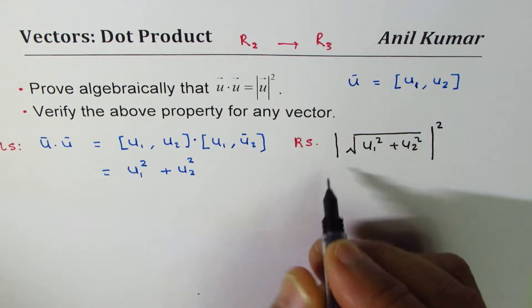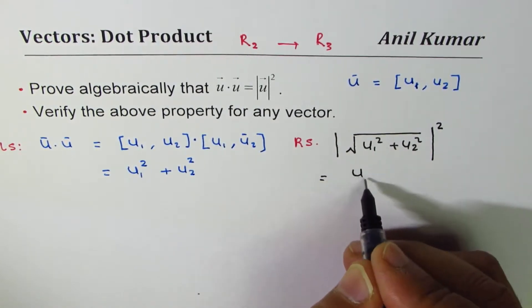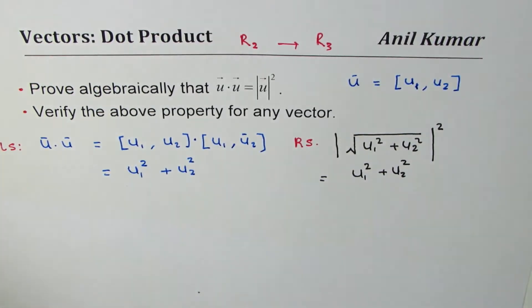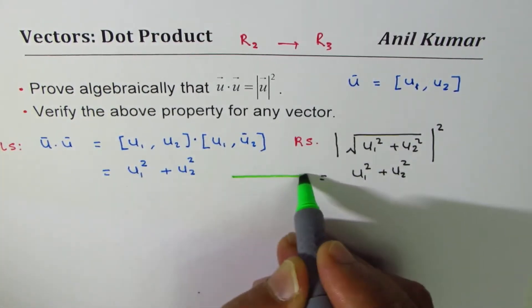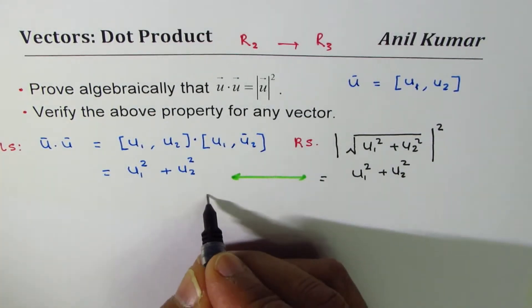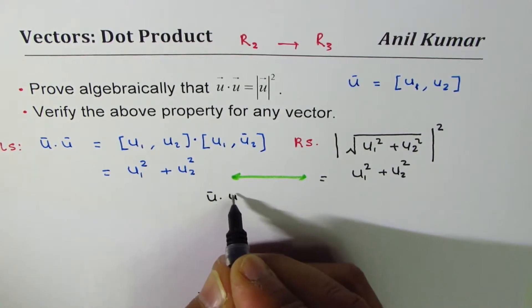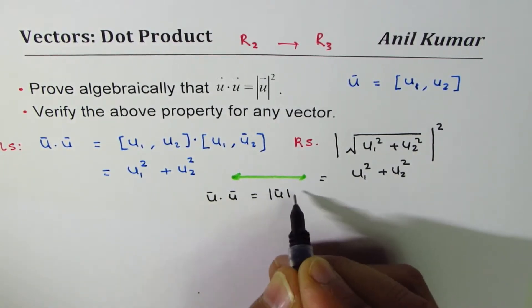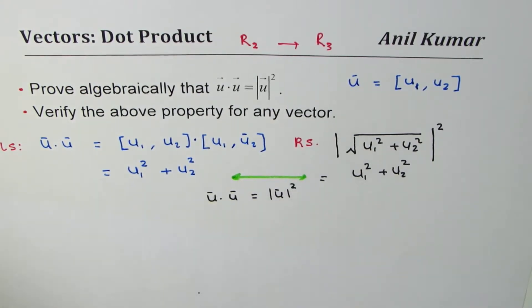I get u1 squared plus u2 squared. You see both quantities are the same, so they are equal. We have just proven that u dot u is equal to square of the magnitude of this vector. That is our part A.